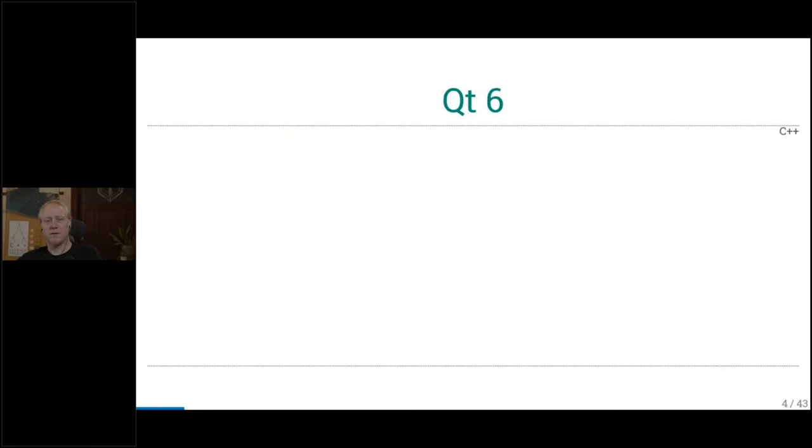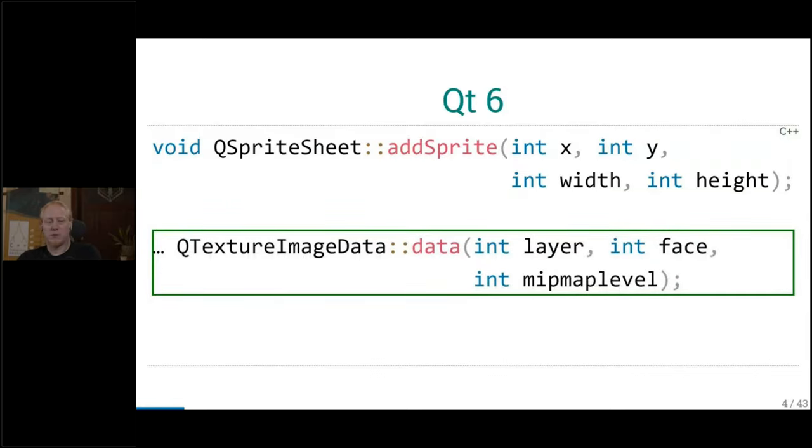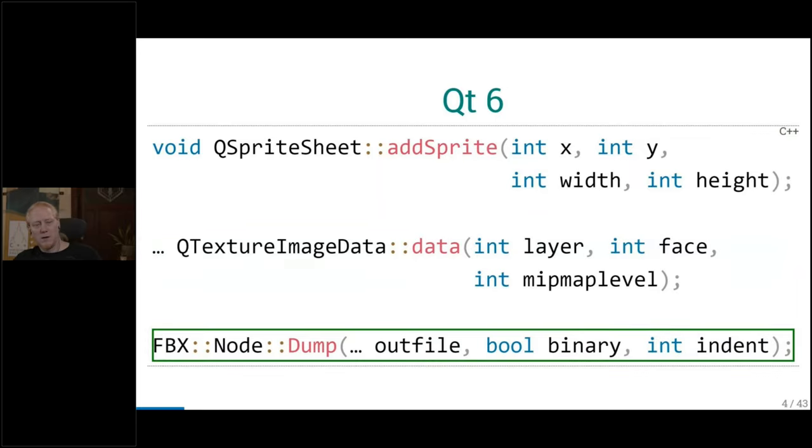It's still the same in Qt5. Those methods don't change signature very often. But we have something like a sprite sheet. We have an addSprite method. It's just four integer arguments. Maybe for a sprite, it's clear that you have an X and Y coordinate and the width and the height. But still, it's confusing to have so many integer arguments. And there's also something I came up with. It's a Qt texture image data that has a method to retrieve the data from a specific layer, a phase in the midmap level. So three integer arguments, quite a bit difficult.